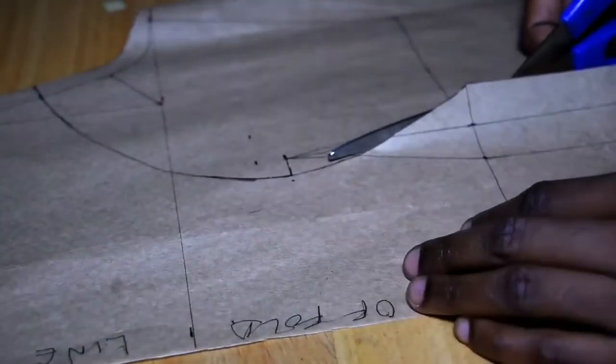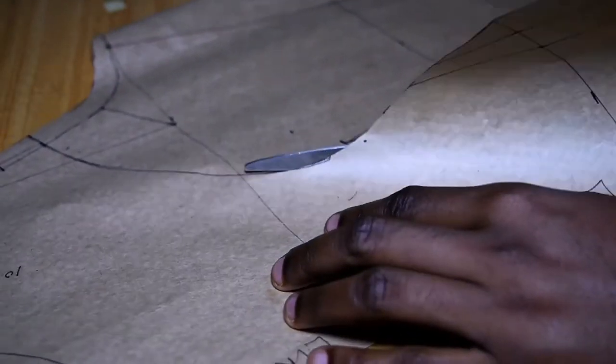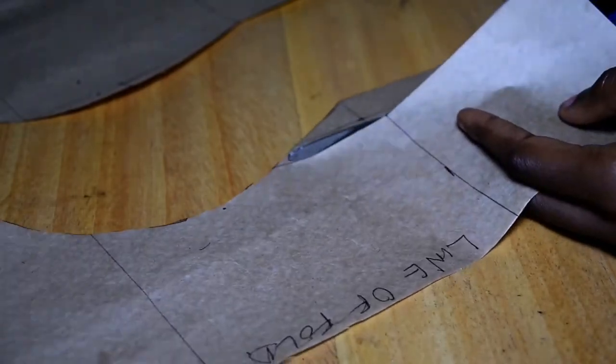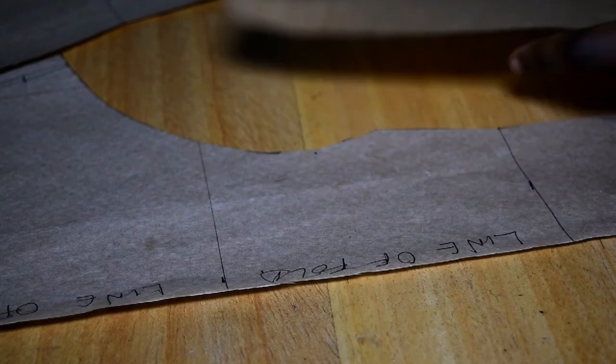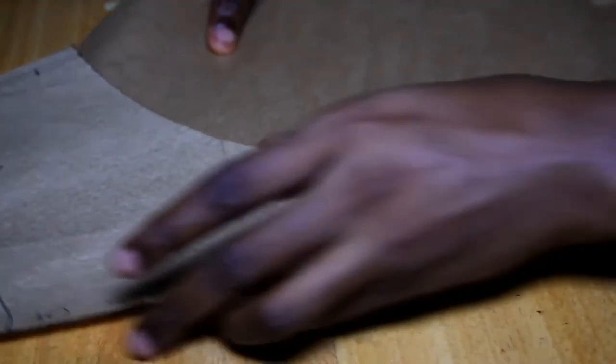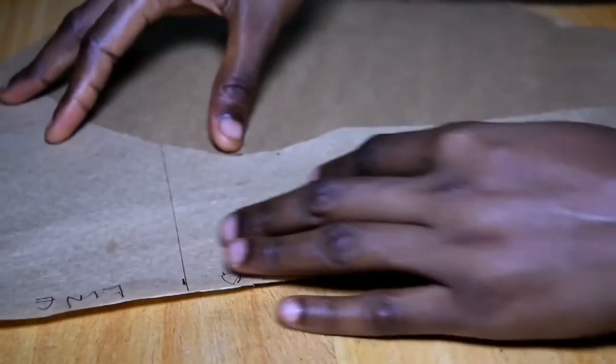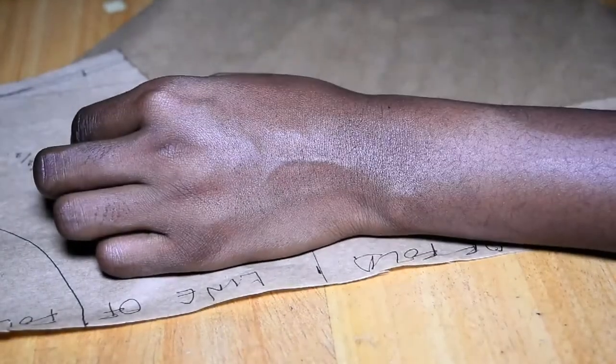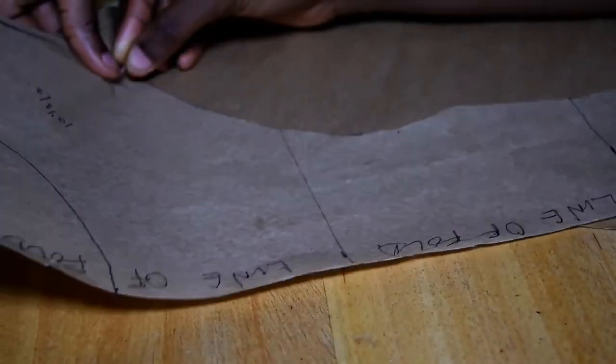We're not done yet. After cutting your dart, everything here is about that manipulation. So after cutting my dart, I'm going to place another piece of paper underneath my pattern where I have the line of fold, and then I'm going to pin the paper in place.